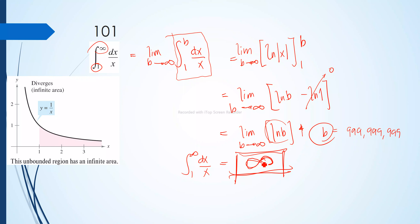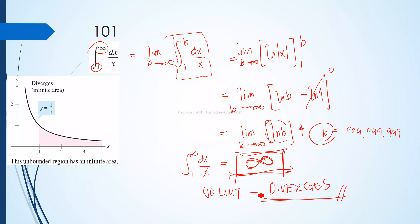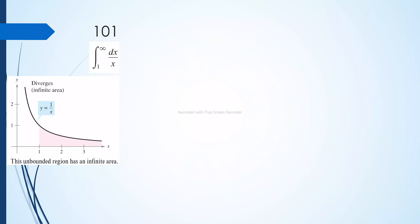Since the solution is infinite — there is no limit existing because the answer is positive infinity — therefore the integral of dx/x from 1 to positive infinity equals positive infinity. Since there is no limit, the improper integral diverges.